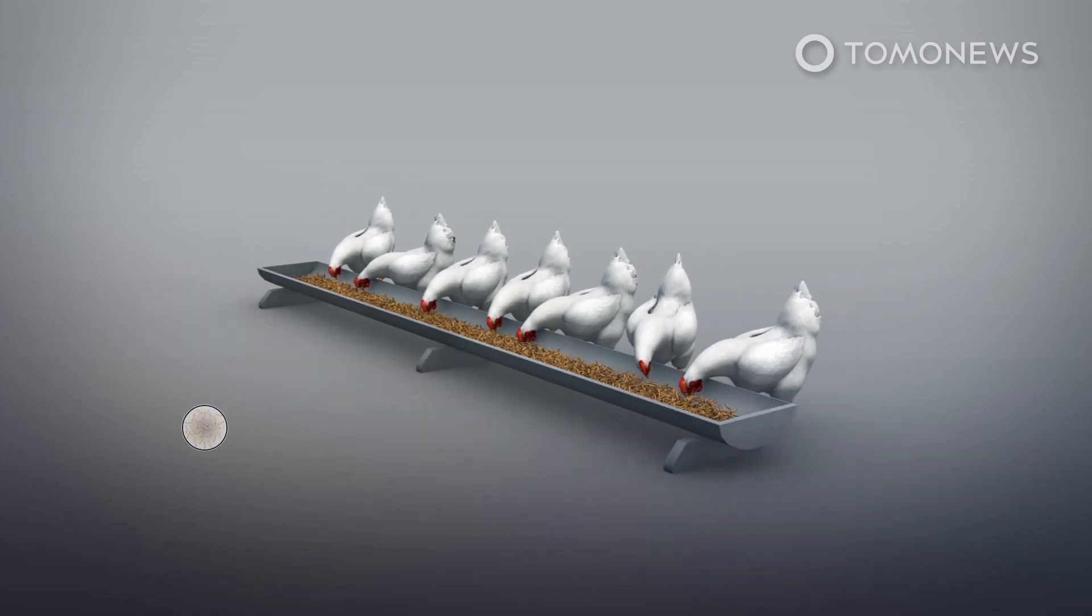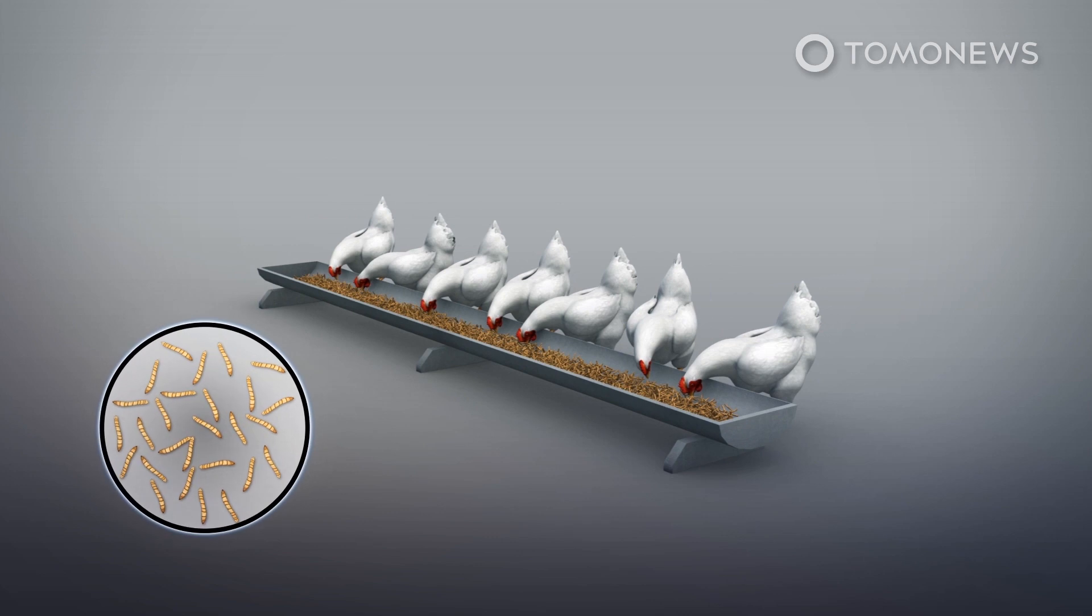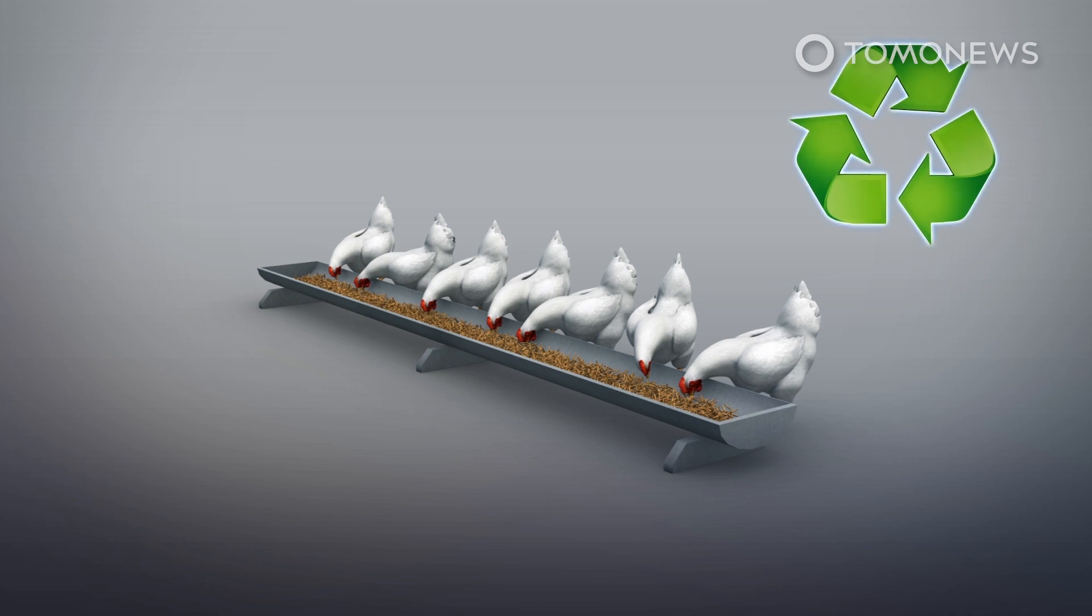Stanford University says that the results have significant implications as the worms are used as feed for various livestock, including chickens. The experiment suggests worms used to consume plastic could still be used as a source of agricultural feed.